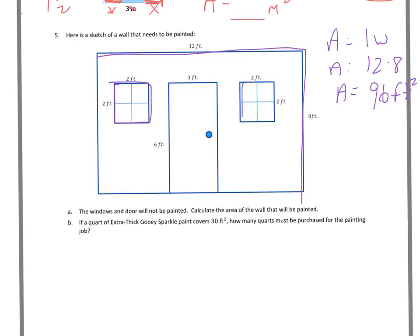Now we want to subtract out the window. This window. This window. And this. So the window. I see that it's 2 times 2. And so that's 4 feet squared. So that's 4.